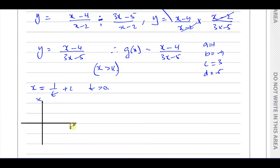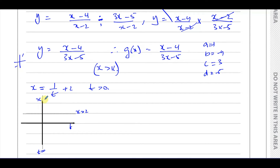We're plotting x against t. This is a reciprocal graph. When t equals 0 it's undefined, so t equals 0 is a vertical asymptote. The other asymptote is x equals 2. Since there's a positive coefficient and plus 2 shift, the graph goes on two sides of the asymptotes — approaching t equals 0 and approaching x equals 2.